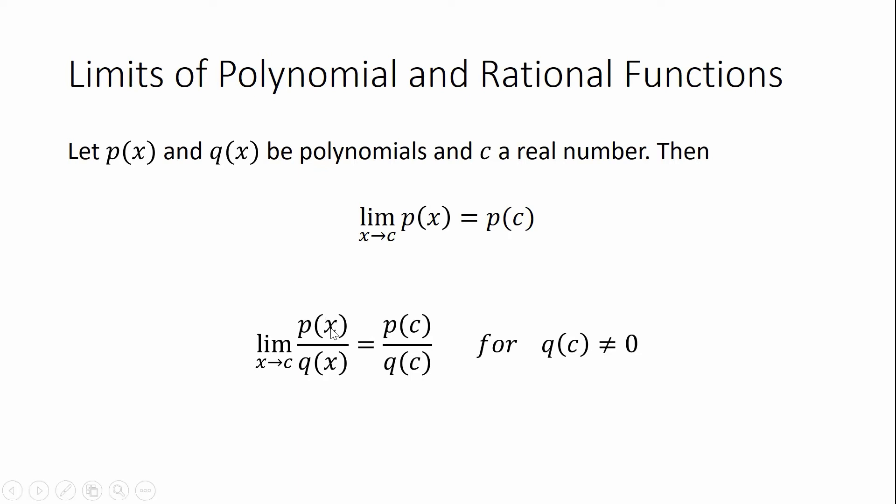Now if you have a rational function, remember a rational function is just a polynomial divided by another polynomial, it turns out you can do the same thing except when the denominator is zero. If that denominator becomes zero, then we have to do some other work. So with polynomials and rational functions, where I don't have denominators of zero, the limits work really nicely. I can simply plug in the number into the function itself in order to find the limit as x goes to that number.